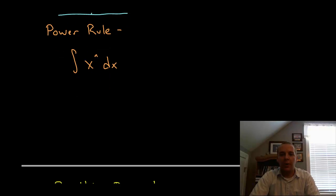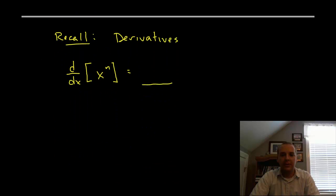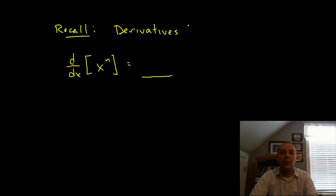Now to remember how to do this, let's actually remind ourselves what we do if we were going to differentiate. If we were going to take the derivative of x to the n, then this n would come down and we'd have n times x to the n minus one. You decrease the exponent by one.